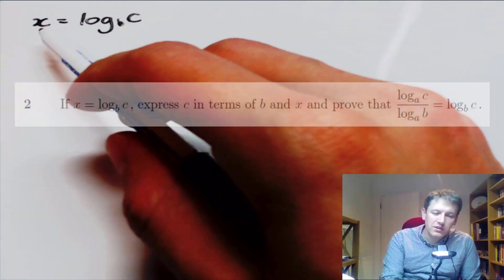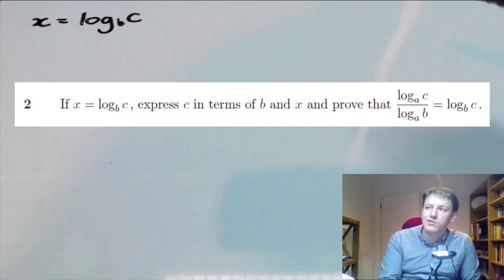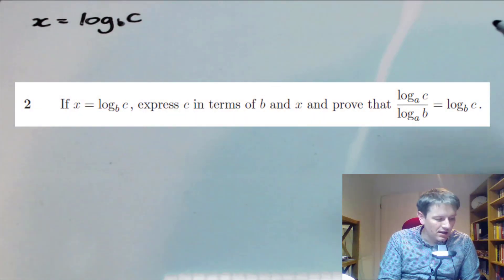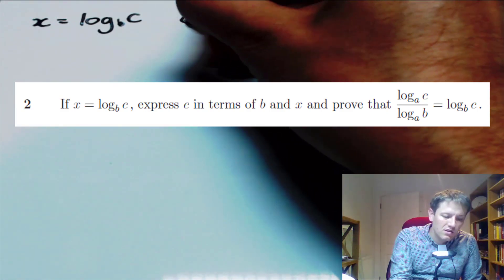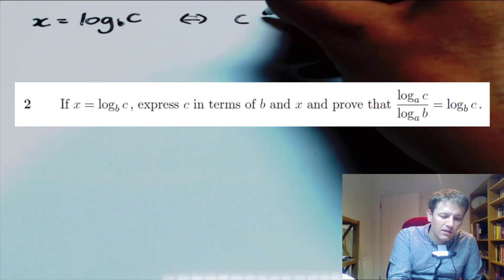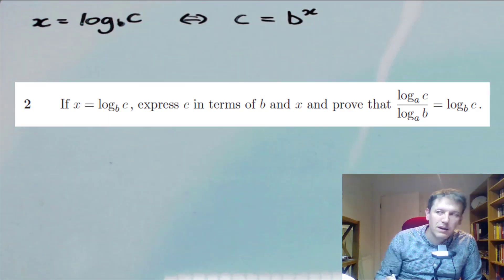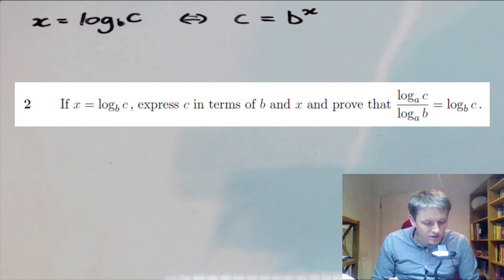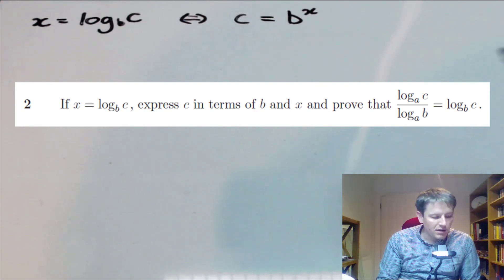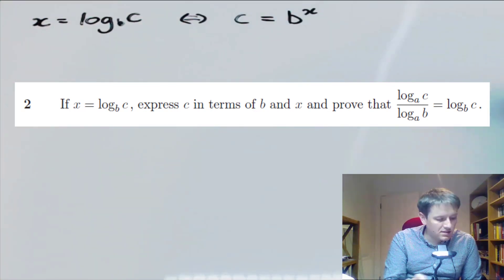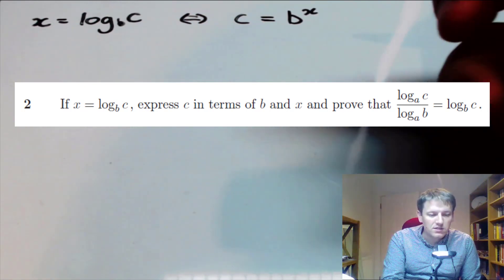This question is really about following the rules of logarithms precisely and following the hints given in the step questions. It starts with an easy part: if x is log to the base b of c, express c in terms of b and x. Hopefully you know this is almost the definition of the logarithm — c equals b to the power x — which you must know from A level. Then it says prove that log base a of c divided by log base a of b equals log base b of c, the change of base rule for logarithms.